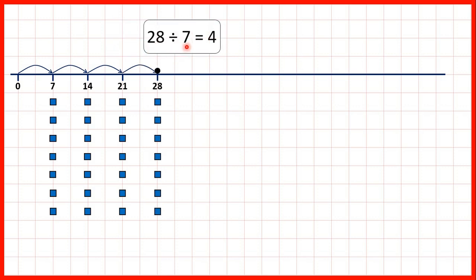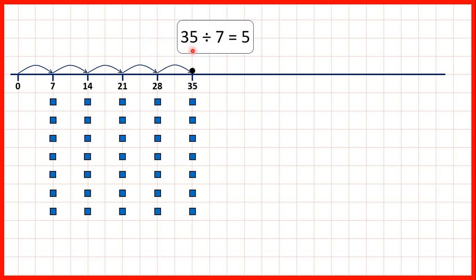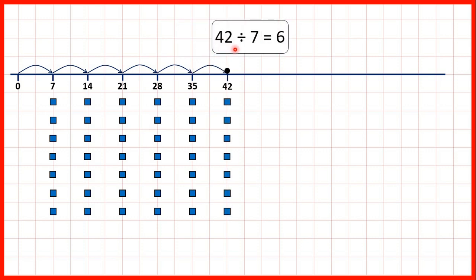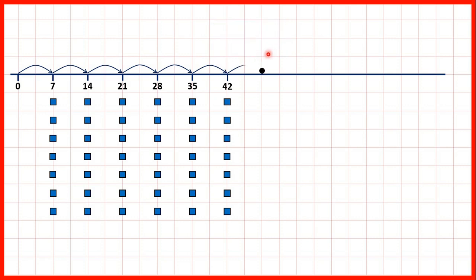28 divided by 7 is 4. 35 divided by 7 is 5. 42 divided by 7 is 6. 49 divided by 7 is 7.